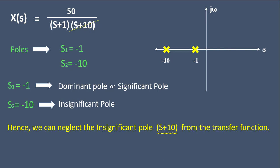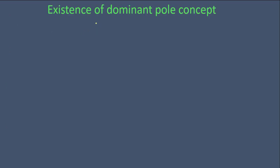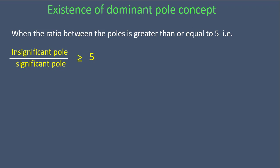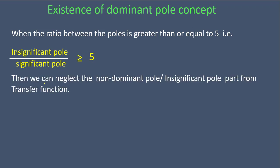Let us discuss whether this concept of dominant pole is applicable to all transfer functions, and if not, when it is applicable. The dominant pole concept is not applicable in all transfer functions. It is applicable only when the ratio of the insignificant pole upon the significant pole is greater than or equal to 5. Then only can we use the concept and neglect the insignificant pole.